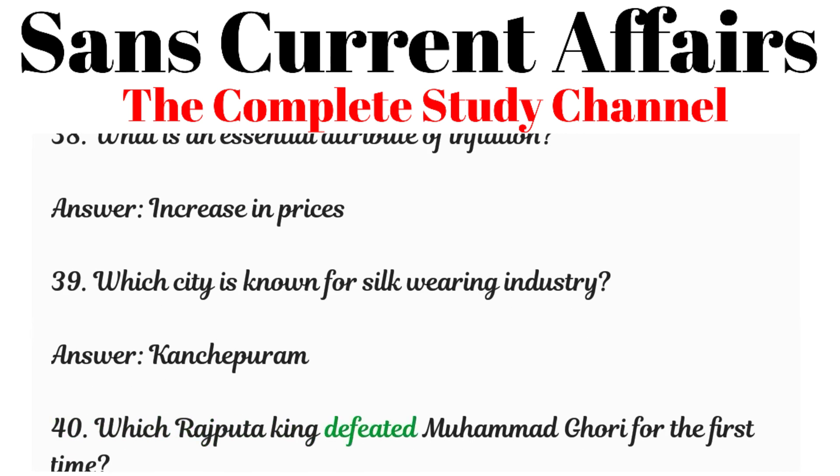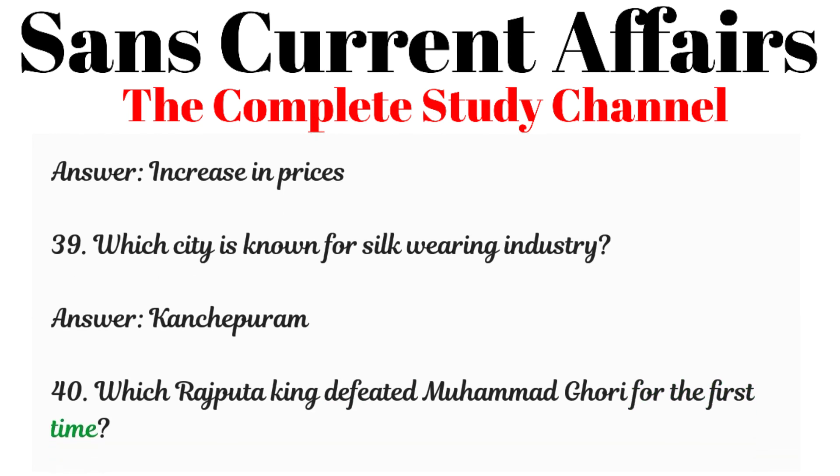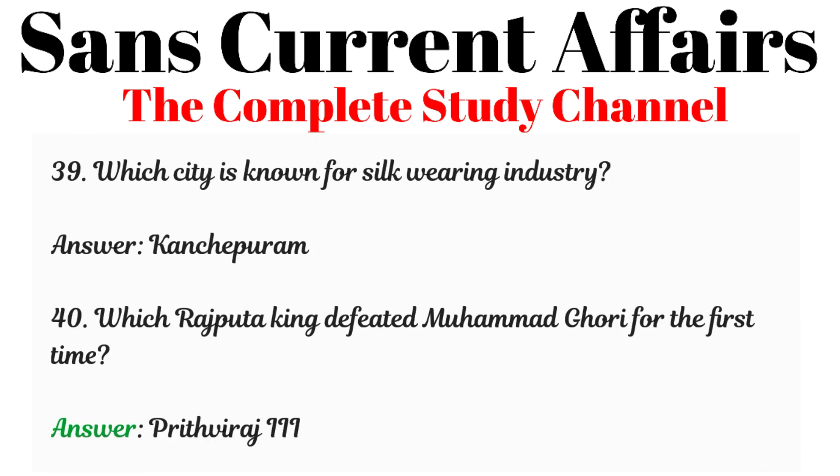Question 40: Which Rajput king defeated Mohammed Ghori for the first time? Answer: Prithviraj III.